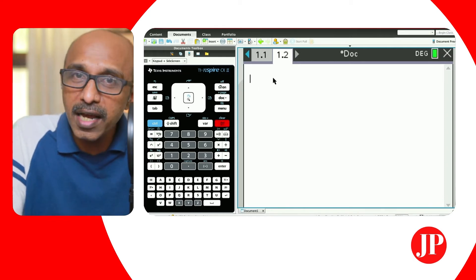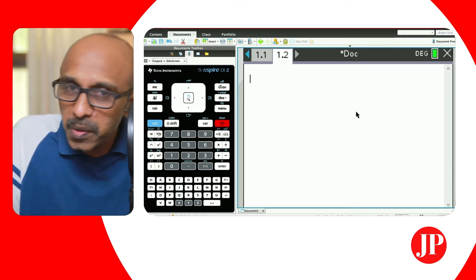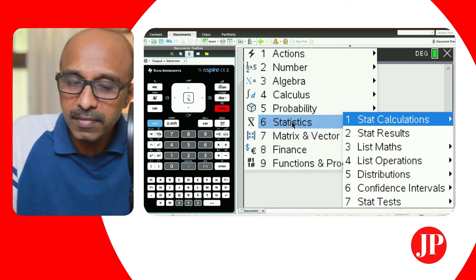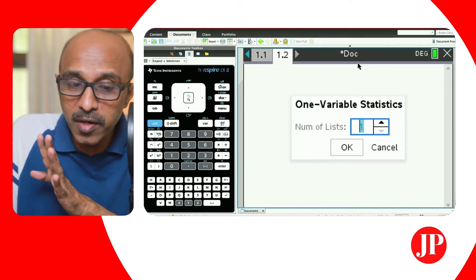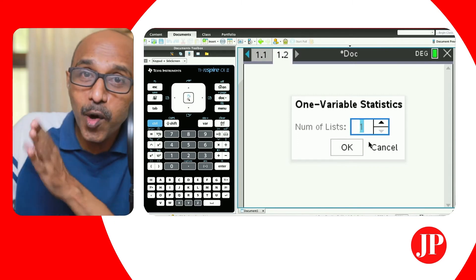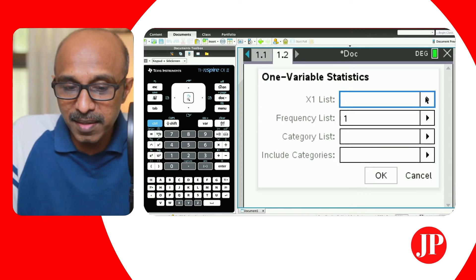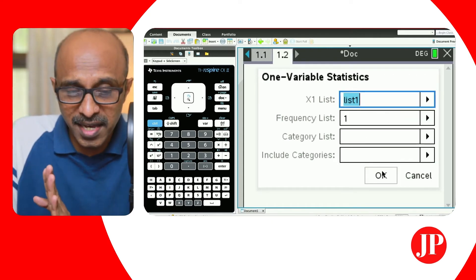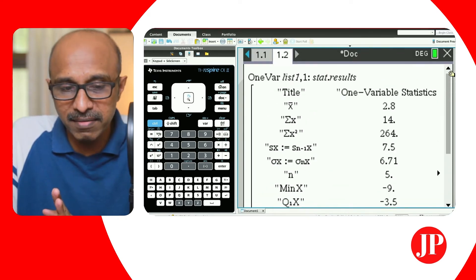Which means I can do the same calculations even on the calculator page. Watch. So now when I'm on a calculator page like this, if I go on menu, statistics, stat calculations, the same thing. One variable statistics, the same thing. So I can go there and I can recall everything that's entered there. So number of lists. One list we have. X list comes from list one. Frequency, we said we're going to keep it just as one. And I say hit enter.